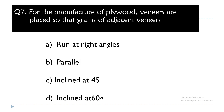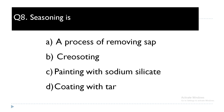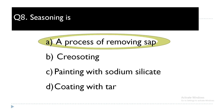Question 7: For the manufacture of plywood, veneers are placed so that the grains of adjacent veneers run at — right angles, parallel, inclined at 45 degrees, or inclined at 60 degrees? Answer: right angles. Question 8: Seasoning is a process of removing — sap, creosoting, painting with sodium silicate, or coating with tar? Answer: seasoning is a process of removing the sap.